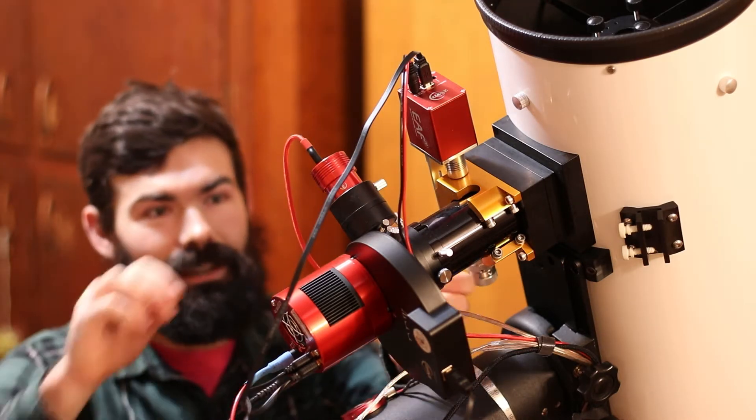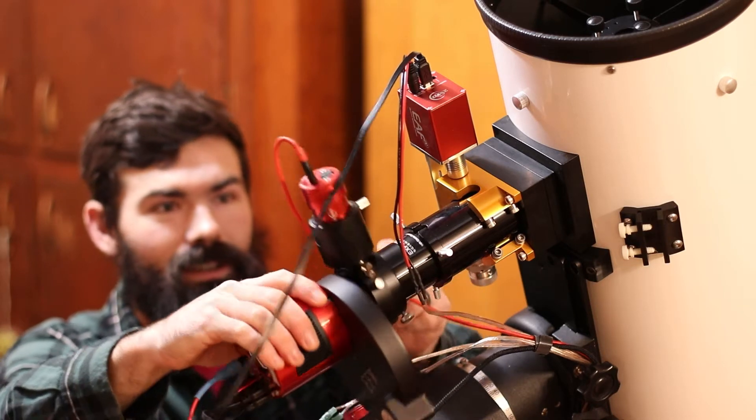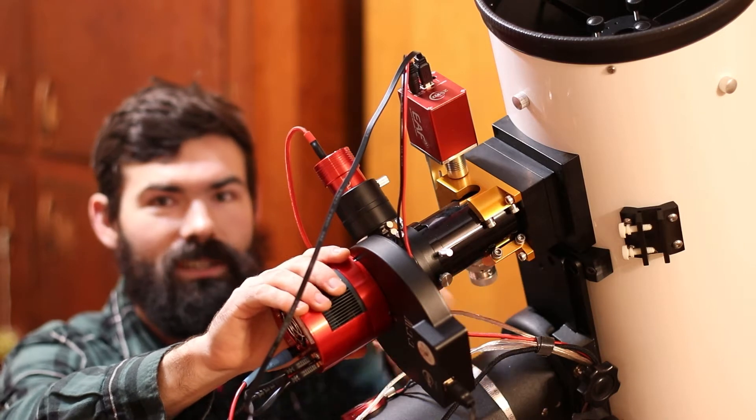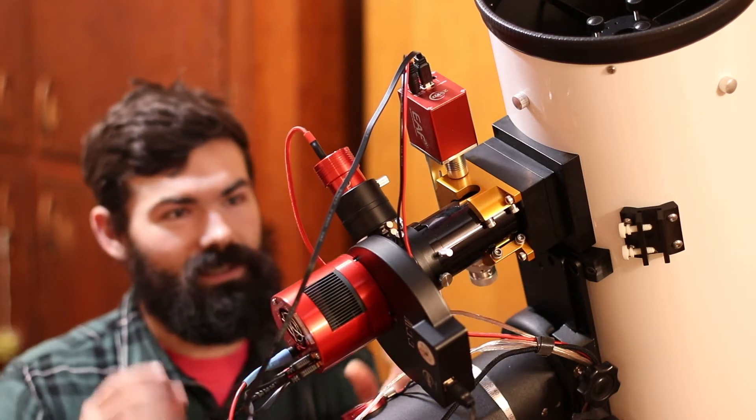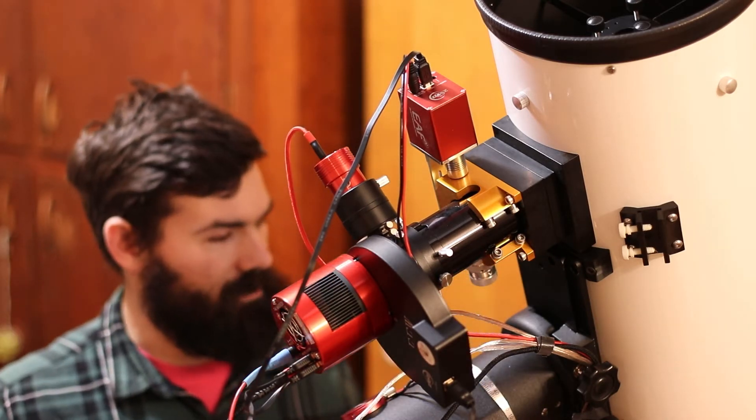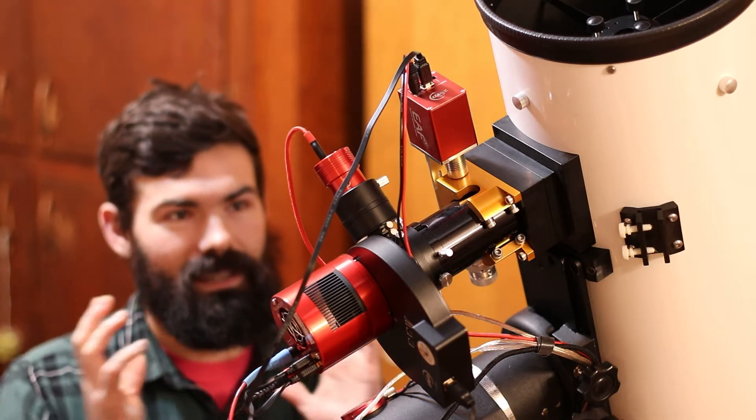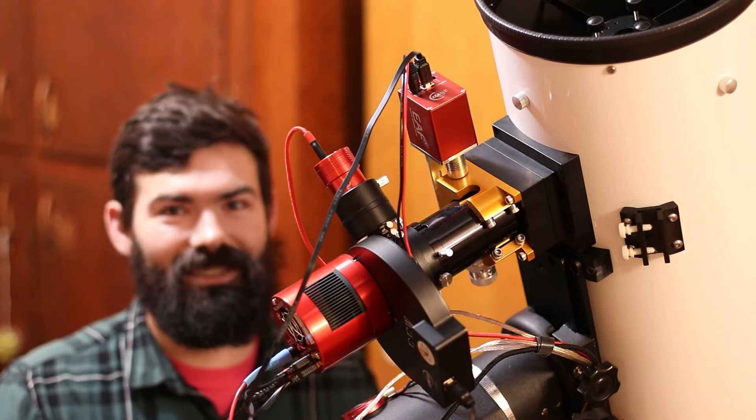So the next thing that you can't really see right now is my coma corrector. This coma corrector is an Explore Scientific HRCC. Really all it's doing is just correcting the shape of the stars because they're imperfect because of how the mirror is designed. So it has glass elements that just make your stars look pretty.